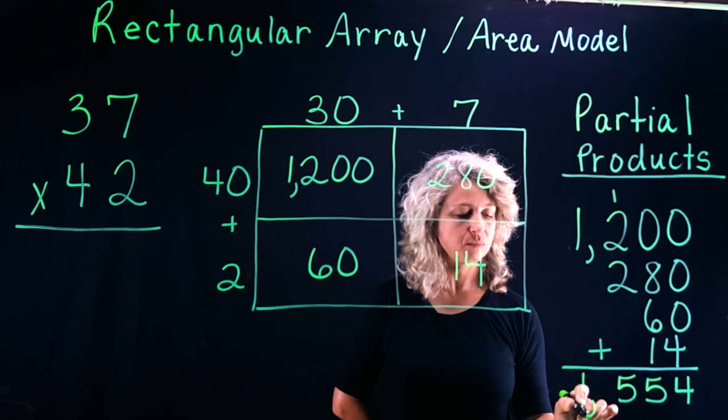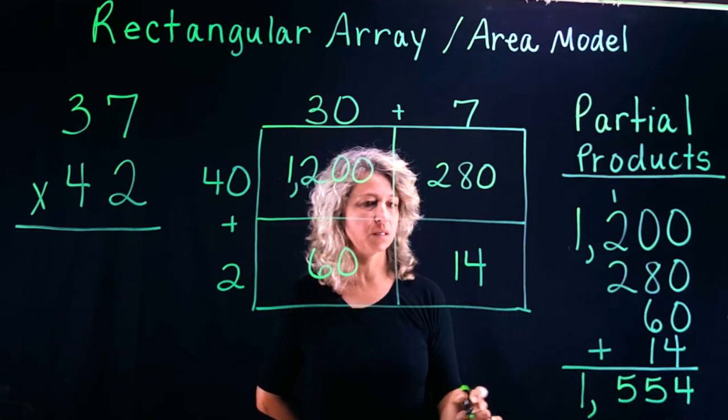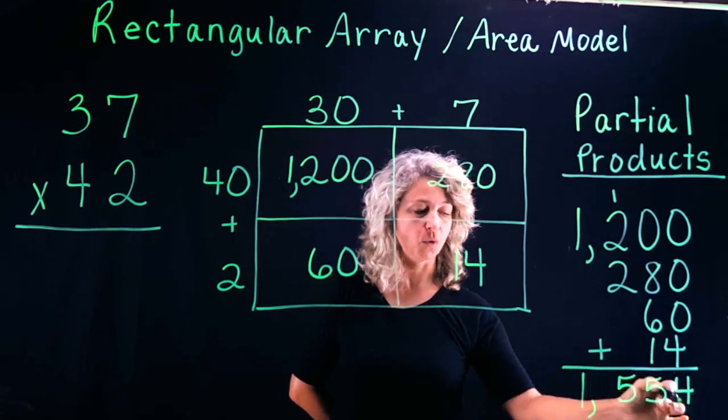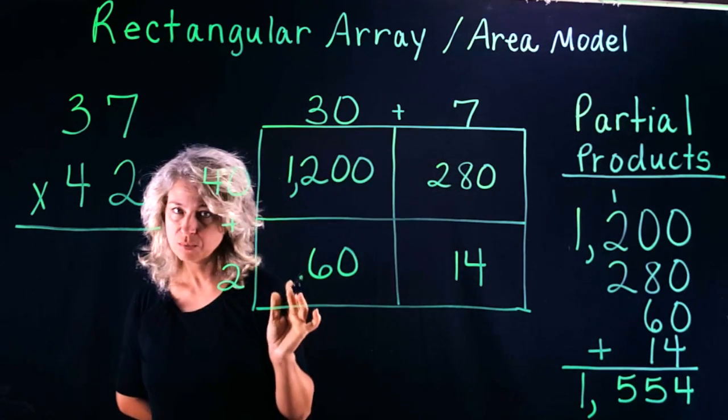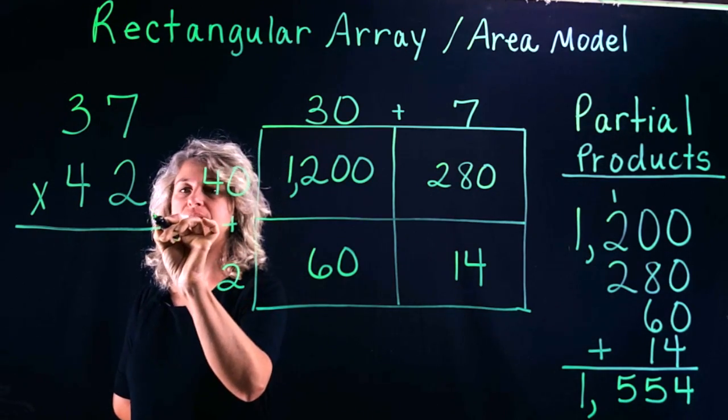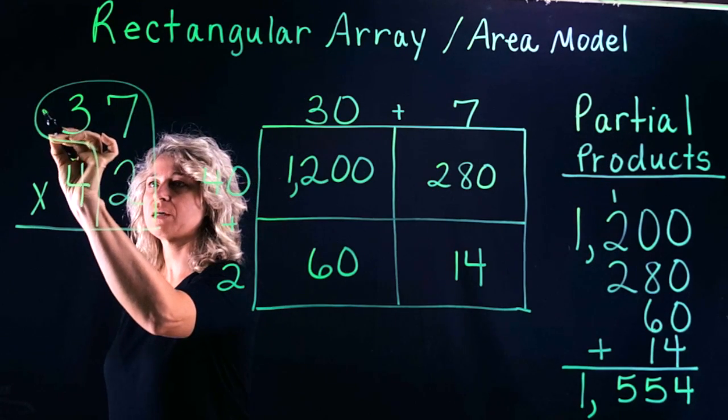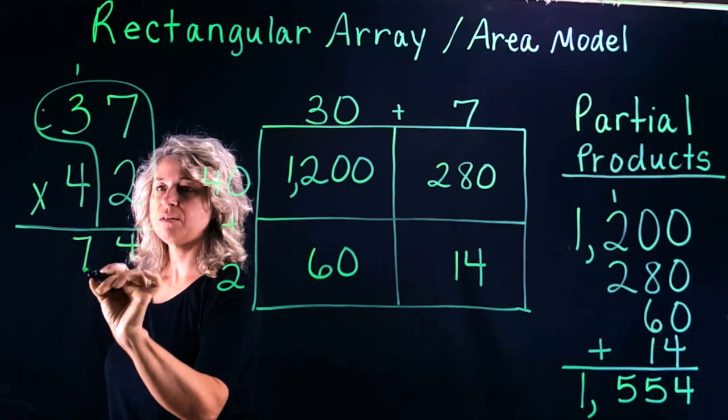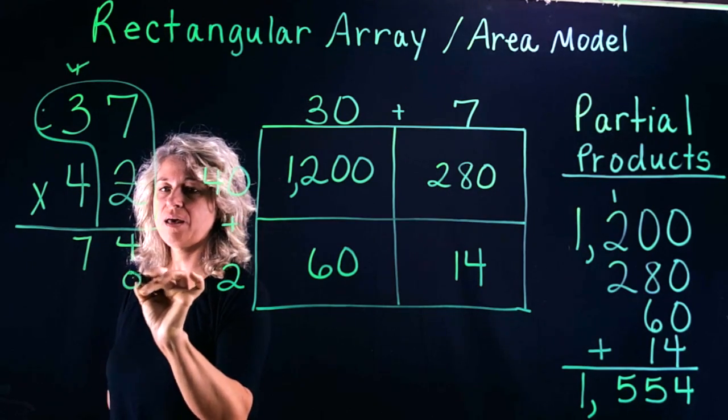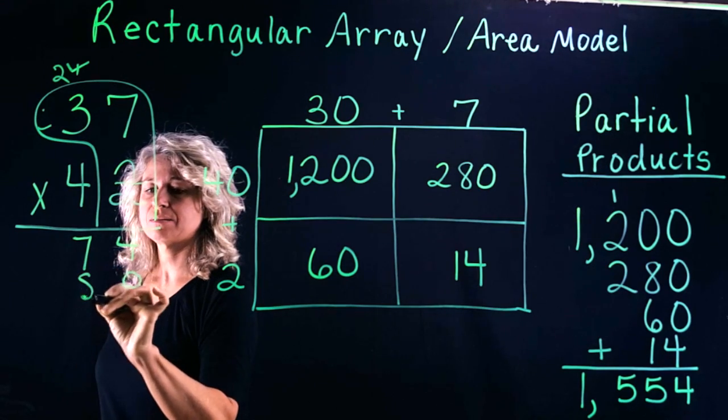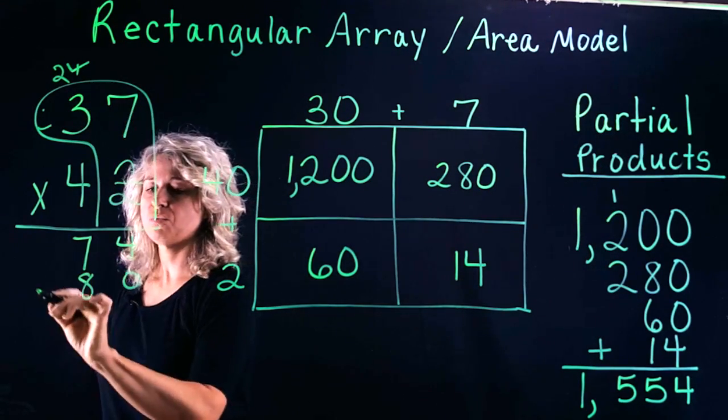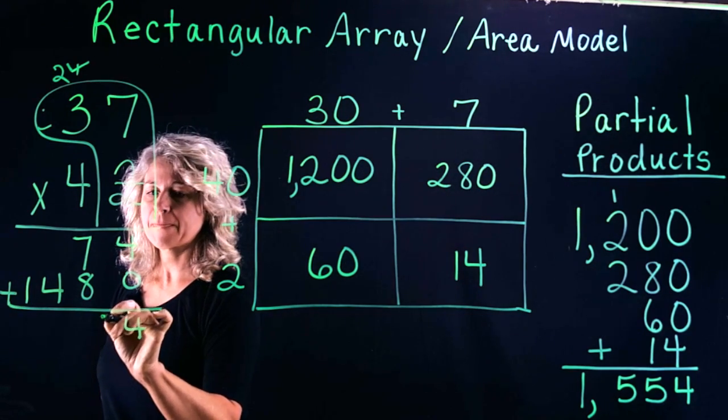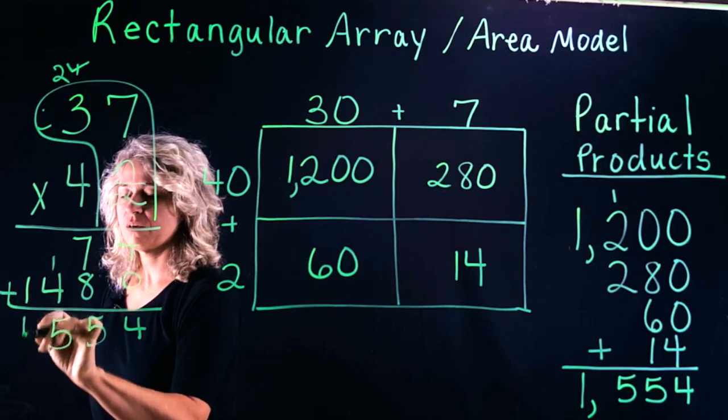So our final product, which is the answer to 37 times 42, is 1554. Now we want to double-check to make sure that we are correct. Let's come over here and check it with the turtle method quickly. 2 times 7 is 14, 2 times 3 is 6 plus 1 is 7. Let's remember our steps: check, collar, lay the egg. 4 times 7 is 28, 4 times 3 is 12 plus 2 more is 14.